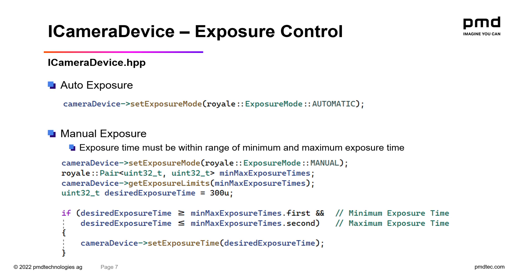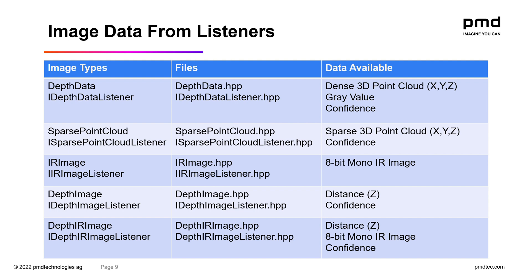Below is an example of how to check the exposure limits and how to set an exposure time manually. This is a list of data types or image types which you can receive from a camera device by registering the appropriate listener. Depth data is a dense 3D point cloud, which also includes gray value and confidence. A sparse point cloud is a sparse 3D point cloud which ignores invalid pixels and also includes a confidence. The IR image represents an 8-bit mono IR image. The depth image includes just the Z distance and confidence.